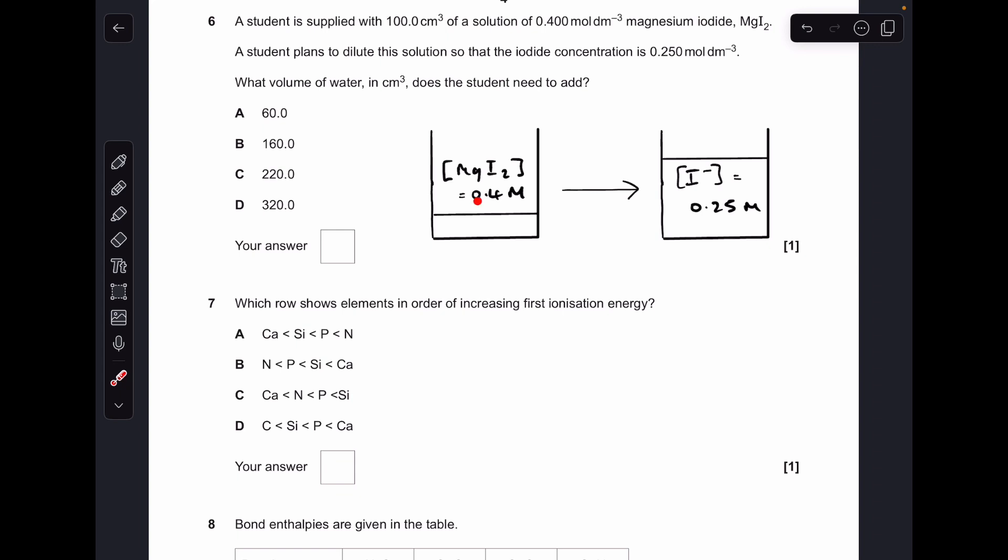Moving on to number six. The first thing we've got to appreciate is that if we've got 0.4 moles per decimeter cubed magnesium iodide, the concentration of iodide ions in here is going to be double that because it's MgI2. So now we've established that we need to look at the factor of decrease in the concentration going from 0.8 moles per decimeter cubed to 0.25 moles per decimeter cubed. So this new solution is 3.2 times less concentrated than the original, so basically we need to dilute it so the volume is 3.2 times bigger.